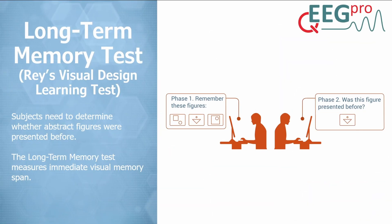The next test measures long-term memory, or immediate visual memory span to be precise. This test is based on the Ray's Visual Design Learning Test and consists of two parts. In part one, 15 abstract figures are sequentially presented on the screen, and the subject is instructed to try to remember these figures because they will be tested on them later. In part two, 30 abstract figures are sequentially presented, of which 15 have been presented in part one. The subject needs to decide whether a figure was previously presented or not. Impaired performance has been demonstrated in patients suffering from neurodegenerative diseases such as Alzheimer's disease. Impaired long-term memory is associated with lesions in either the temporal lobes, the hippocampus, or both, and long-term use of psychoactive substances like MDMA or cannabis can also lead to impaired long-term memory performance.